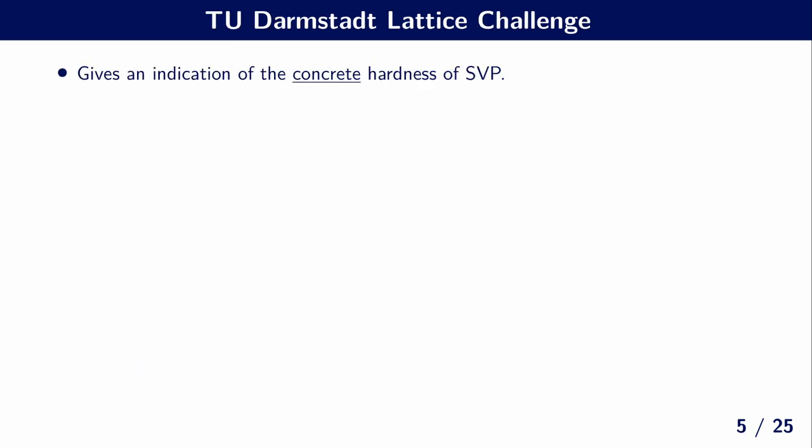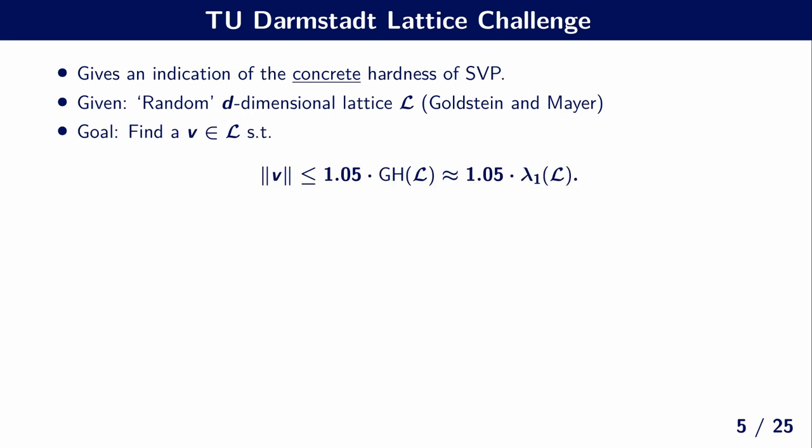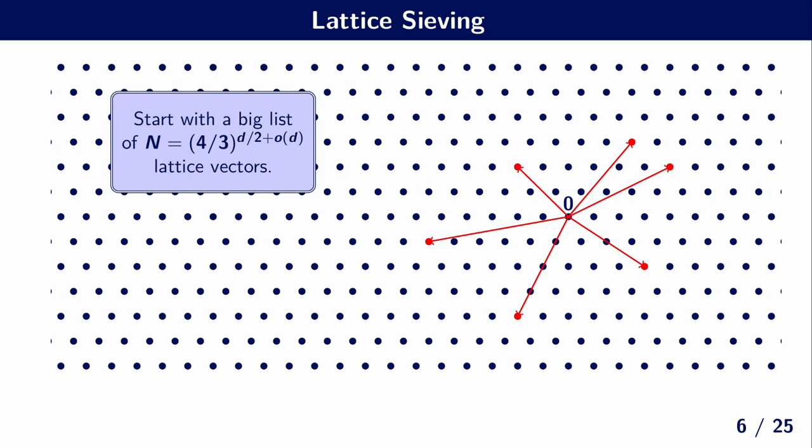So to give an indication of the concrete hardness of the shortest vector problem, we have the TU Darmstadt lattice challenges. So as a challenge, we are given a random d-dimensional lattice, and the goal is to find a vector that's at most 5% longer than the expected minimum length of the shortest vector.